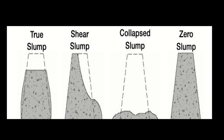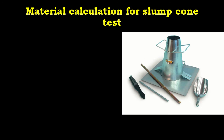Collapse slump indicates very high workability, shear slump indicates high workability, and true slump indicates good workability — we always require a true slump. The slump cone apparatus has a top diameter of 10 centimeters, a bottom diameter of 20 centimeters, and a complete height of 30 centimeters. The tamping rod is used for the compaction process.